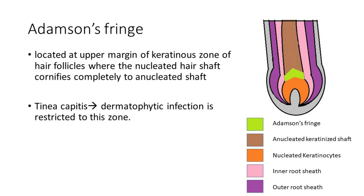Just above the bulb region lies Adamson's fringe, located at the upper margin of the hair follicle where nucleated hair shaft cells cornify completely to enucleated hairs. The main clinical importance of Adamson's fringe is that when a fungus — as in tinea capitis — invades the hair follicle, it extends down to this region from above and cannot pass it. It forms a ring of mycium at this region.